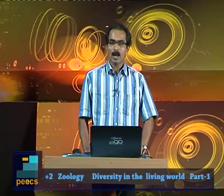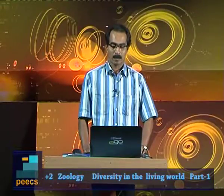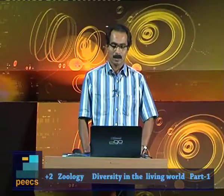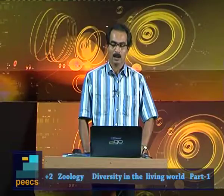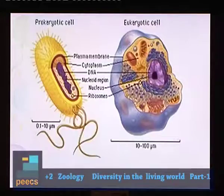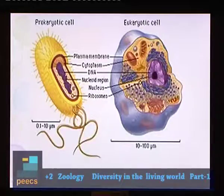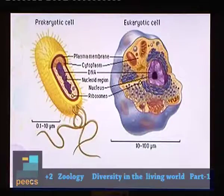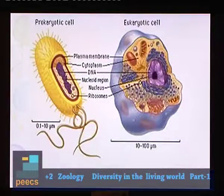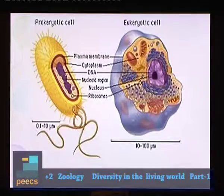There are two types of cells in organisms: prokaryotic cells and eukaryotic cells. In bacteria, there is a prokaryotic cell because it does not have a definite nucleus with a clear nuclear membrane. Higher organisms carry eukaryotic cells, meaning eukaryotic cells have a definite nucleus with a clear nuclear membrane.